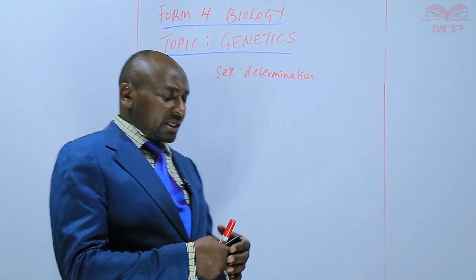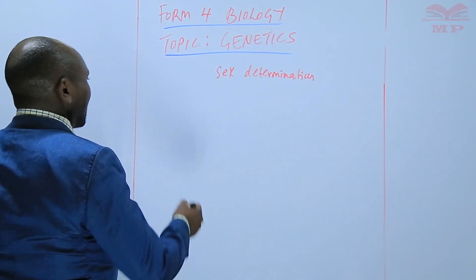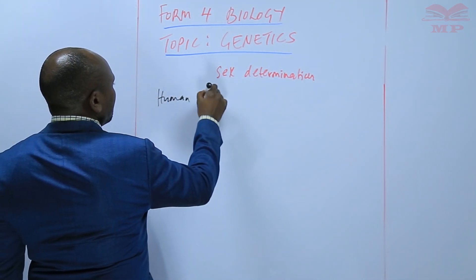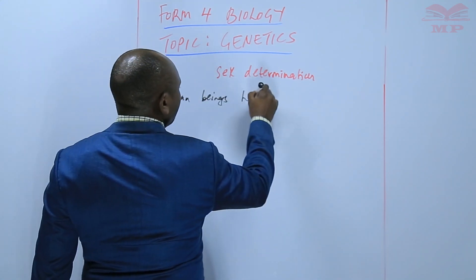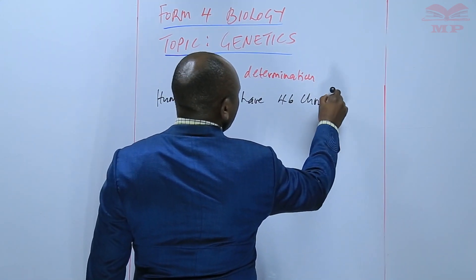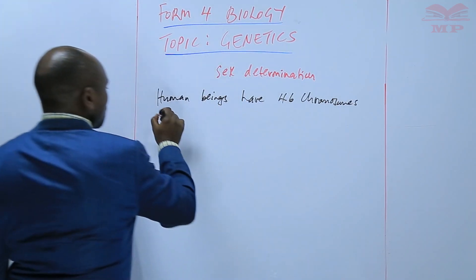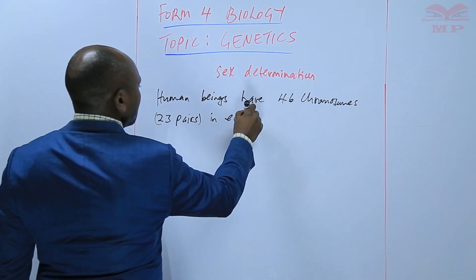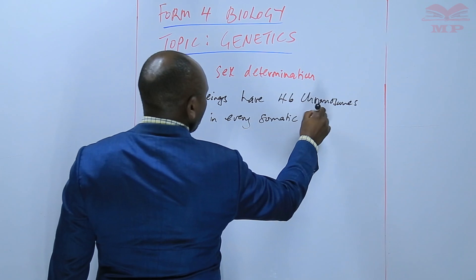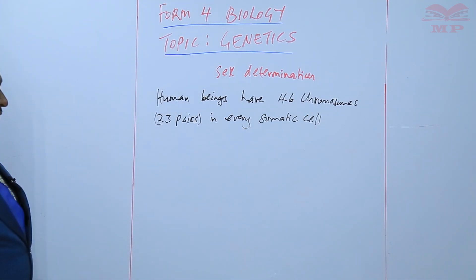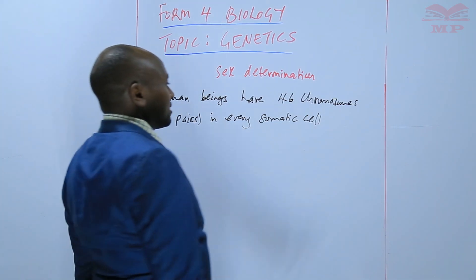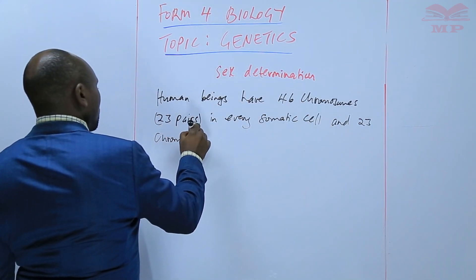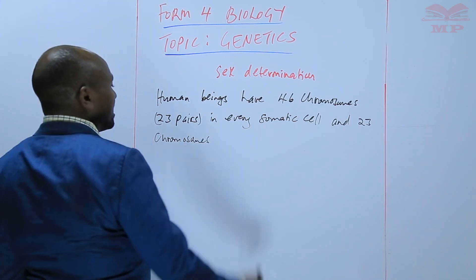First of all, human beings have 46 chromosomes — that is 23 pairs in every somatic cell, in every body cell. And 23 chromosomes — not 23 pairs, but 23 chromosomes — in every gamete.